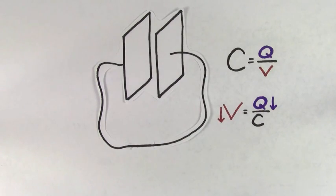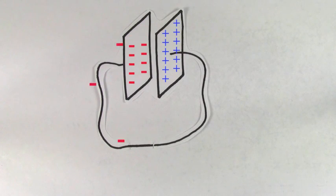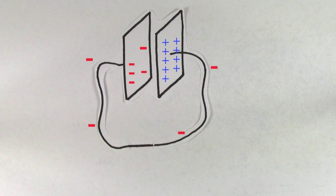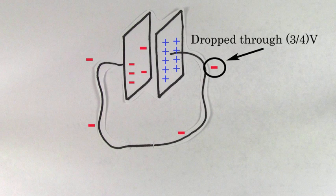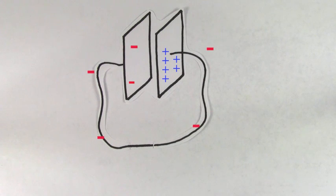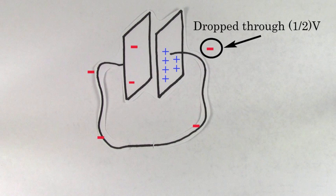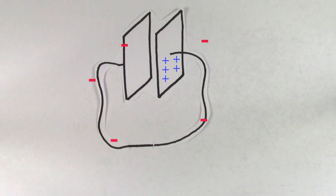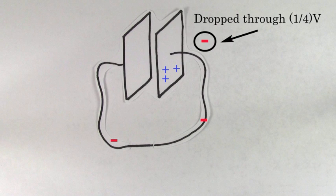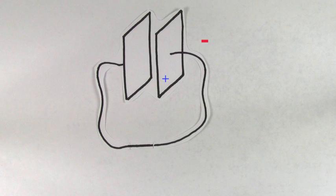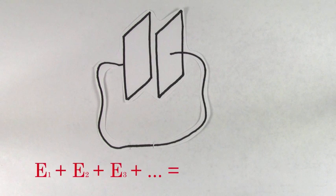As more and more charge gets transferred, there'll be a point where a charge only drops through three-fourths of the initial voltage. Wait longer and there'll come a time when a charge gets transferred through only a half of the initial voltage. Wait even longer and a charge will only get transferred through a fourth of the initial voltage. And the last charge to get transferred drops through almost no voltage at all because there's basically no charge left that's stored on the capacitor.